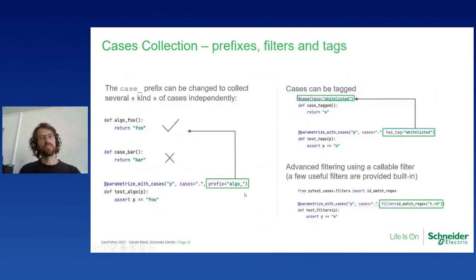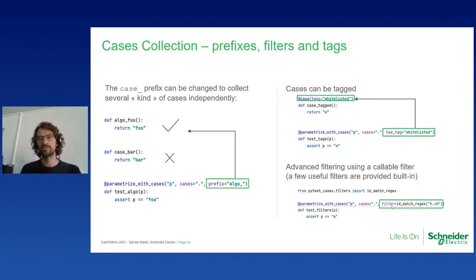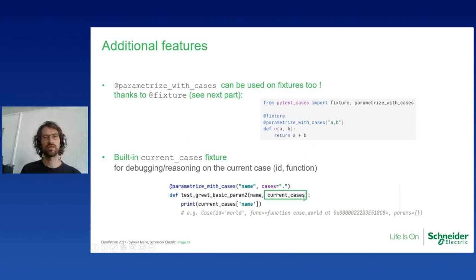On top of collection, I see I have five minutes left so I'll skim through this: there are many tools such as different prefix support, tags for filtering, and callable filters with a built-in library of filters. All of these allow you to multiplex your cases — you can put all your cases in a single file but still have test functions grab only the ones they're interested in. You can also use parametrize_with_cases to parameterize fixtures using the fixture decorator provided by PyTest Cases. There's also a built-in fixture called current_cases that lets you know the function and ID of the case injected — useful for debugging.